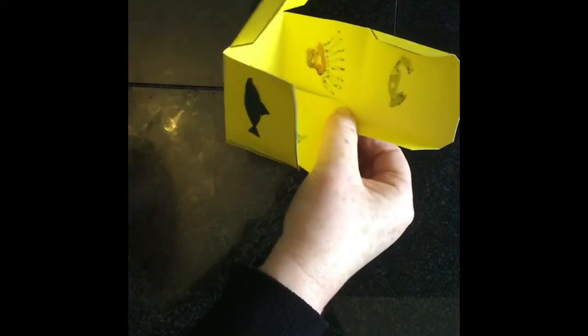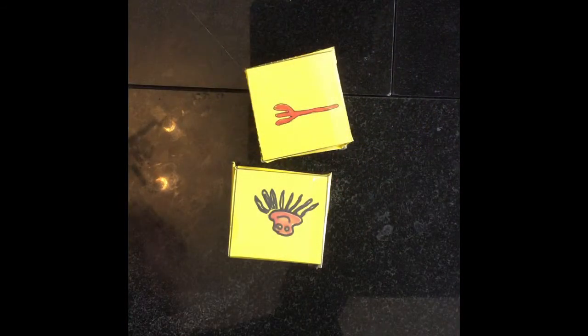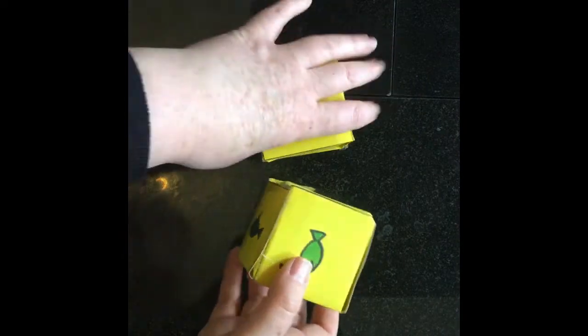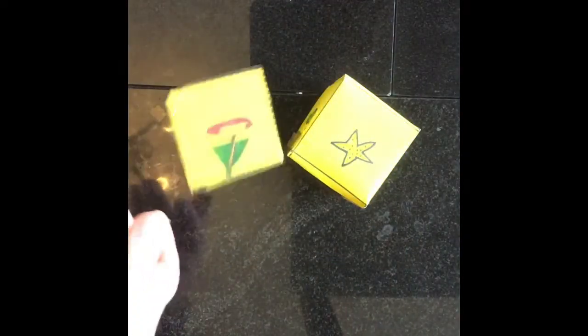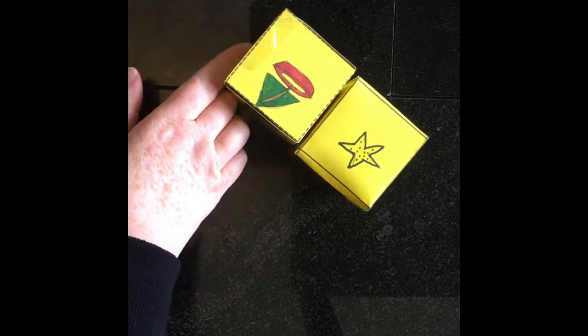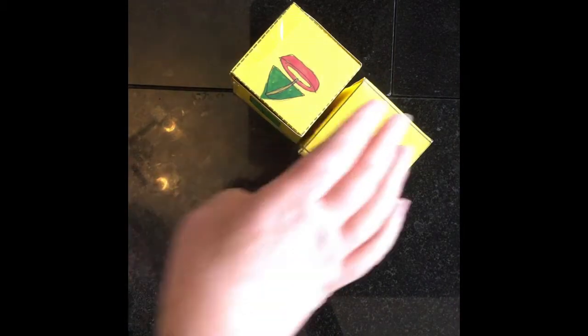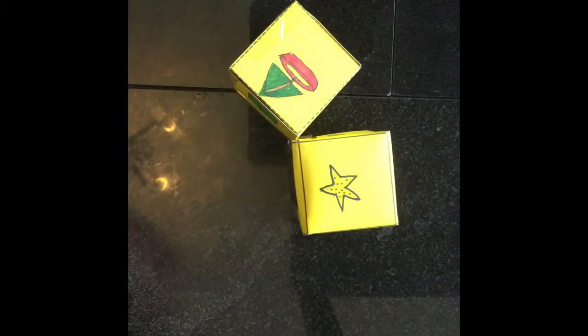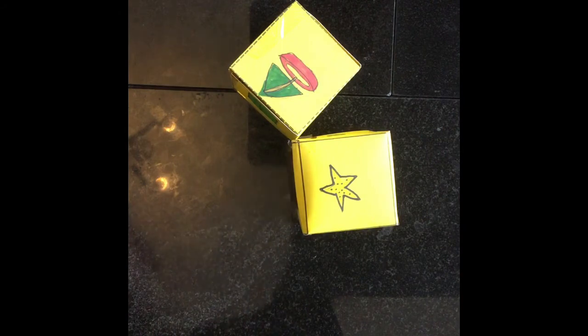So here's our finished cubes and we're ready to play with them. What we do is roll them and whatever comes up, we have to make a story with. So in this case, we've got a starfish and a boat, so the story would involve a starfish and a boat. This is a great way for kids to do some oral storytelling.